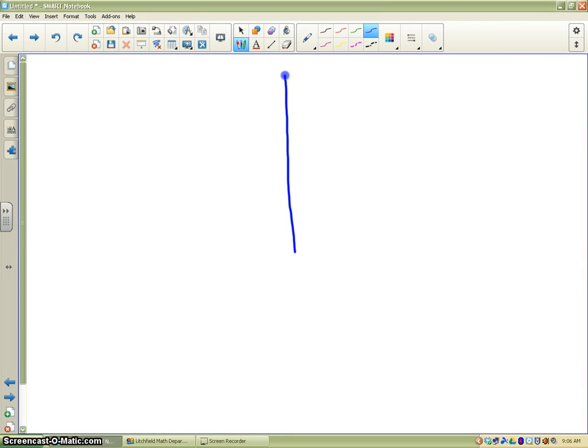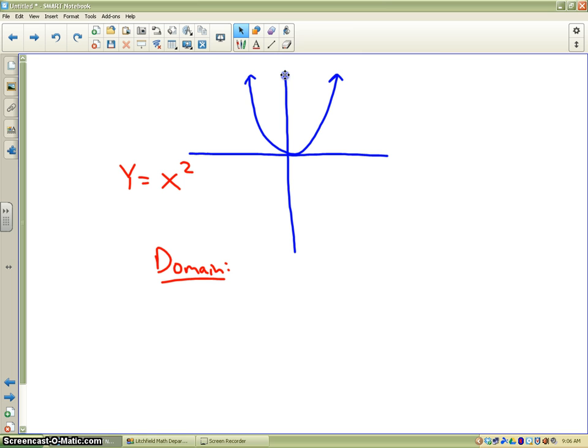One more feature that we've talked about all year long dealing with graphs is domain and range. The parent function for quadratics is y equals x squared. If you talk domain, domain is the x direction. The arrows indicate that they continue to go on forever. So therefore, the domain is actually all real numbers from negative infinity to positive infinity.